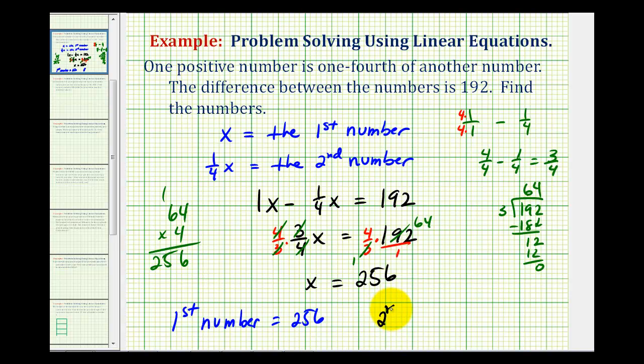Notice the second number is one-fourth times x, or one-fourth times 256, which would be sixty-four. And we should recognize this because sixty-four times four did give us two hundred fifty-six. So sixty-four would be one-fourth of two hundred fifty-six.